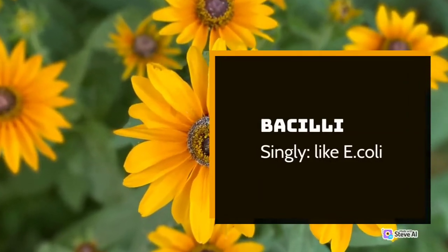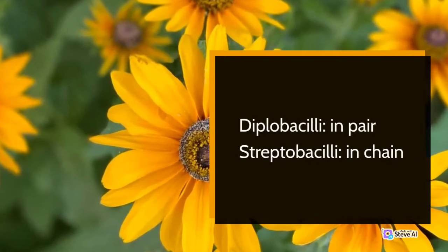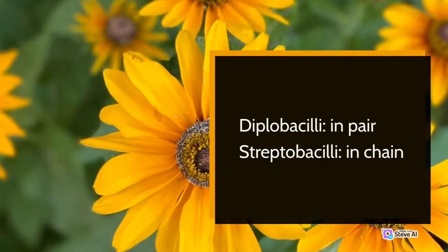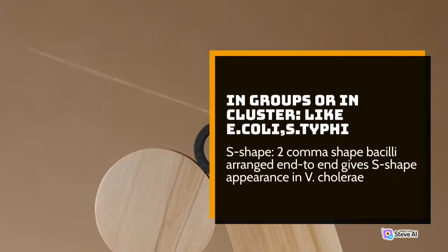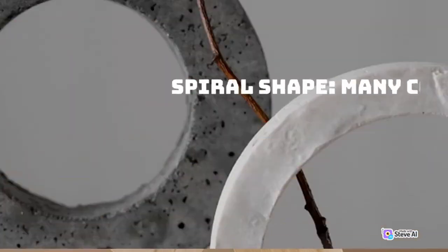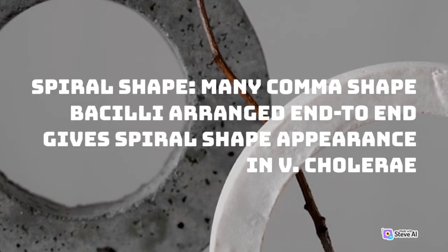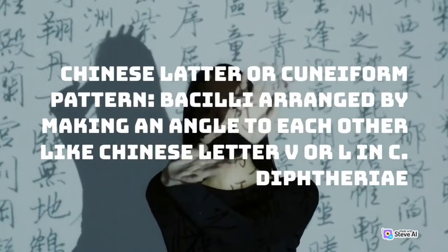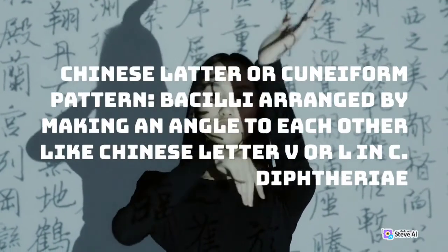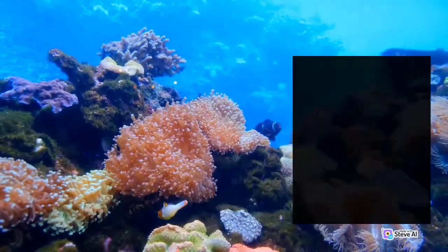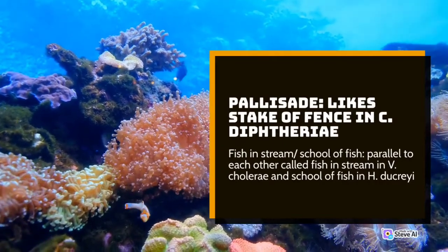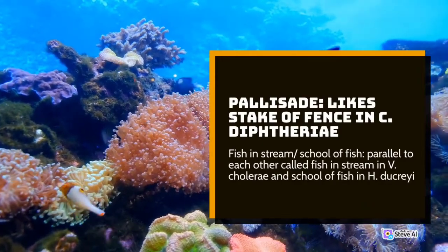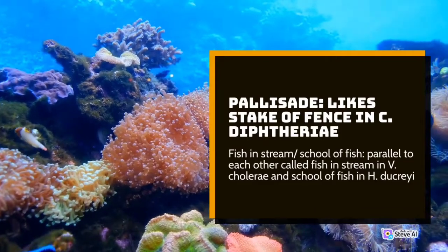Bacilli arrangements: Singly — like E. coli. Diplobacilli — in pairs. Streptobacilli — in chains. In groups or clusters like E. coli. S. typhi — S-shape, where 2 bacilli arranged end to end give an S-shape appearance. Vibrio cholerae — spiral shape, where many bacilli arranged end to end give a spiral shape appearance. Chinese ladder or cuneiform pattern — bacilli arranged at angles to each other like Chinese letters, seen in C. diphtheriae. Palisade — like stakes of a fence, in C. diphtheriae. Fish in stream or school of fish — bacilli parallel to each other, seen in V. cholerae and H. ducreyi.